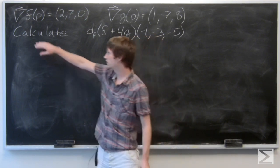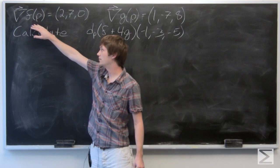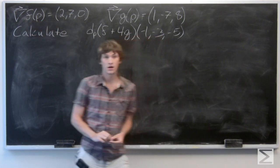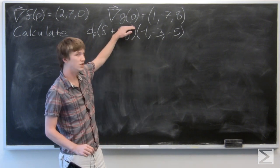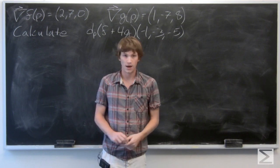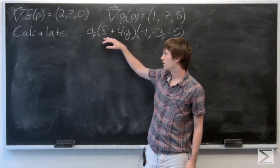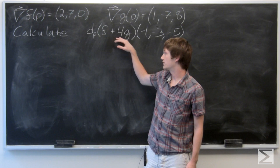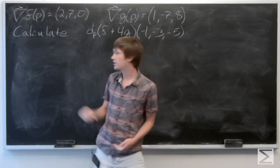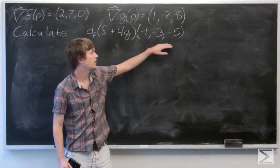In this problem, we're told to suppose that the gradient vector of f at p is equal to the vector 2, 7, 0. And the gradient vector of g at p is equal to the vector 1, 2, 7, 8. We're asked to calculate the total derivative of the quantity f plus 4g at p with respect to the vector negative 1, negative 3, negative 5.